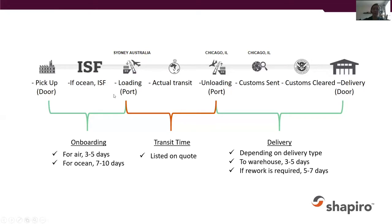Quick review: door is the supplier, then port of loading, then port of unloading, then door for delivery. If you're looking at a quote, you're mainly looking at that port-to-port portion. Make sure you're taking into account the onboarding and the delivery as well.